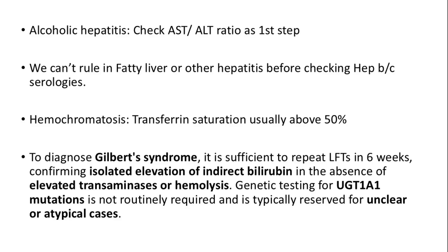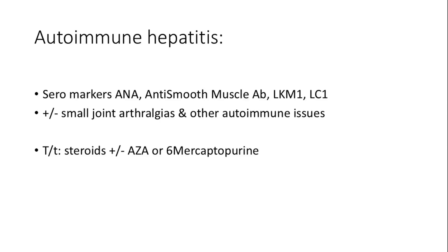Genetic testing for UGT1A1 mutations is not routinely required and is typically reserved for unclear or atypical cases. Autoimmune hepatitis is characterized by seromarkers such as ANA, anti-smooth muscle antibody, LKM1, and LC1. Patients may experience small joint arthralgias and other autoimmune issues. Treatment typically involves steroids with or without azathioprine or 6-mercaptopurine.